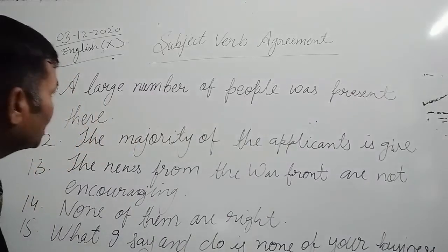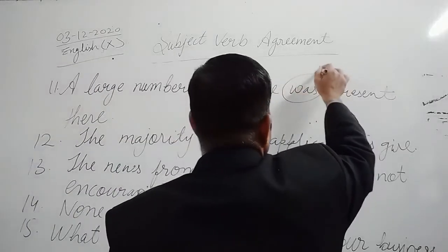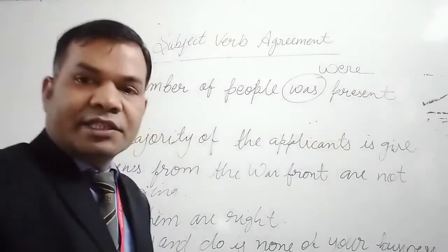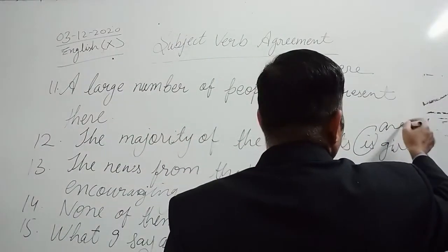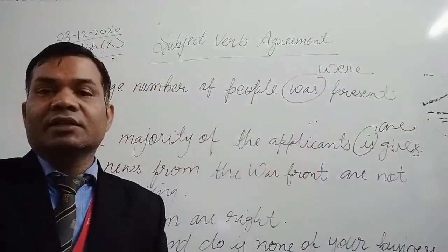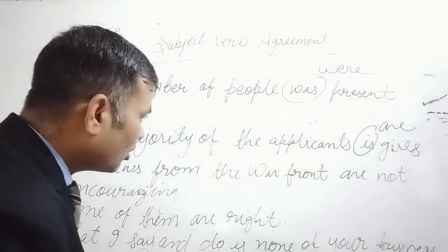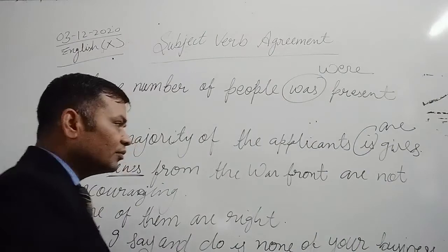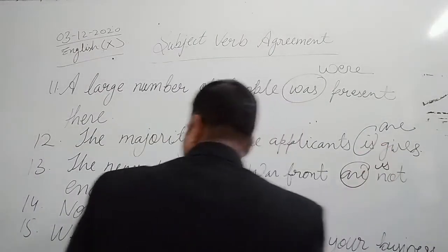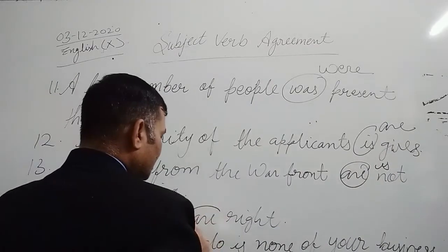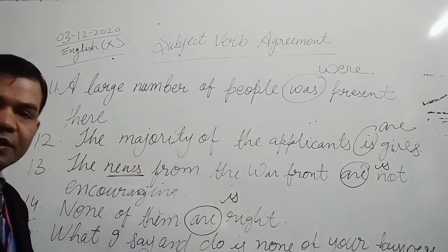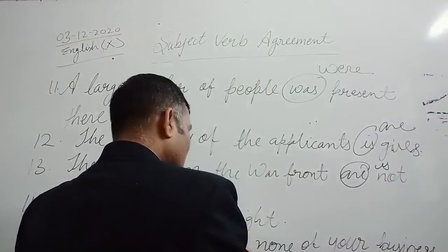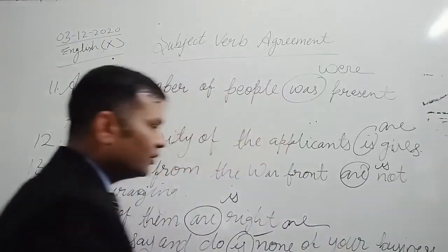A large number of people — 'number of people' is plural, so 'were present there.' The majority of the applicants — here it is plural, so it should be 'are girls.' The news from the war front — news is singular, plural in form but singular in sense, so it should be 'is.' None of them — with 'none of,' a singular verb is used, so 'none of them is right.' What I say and do — it should be 'what I say and do are none of your business.'